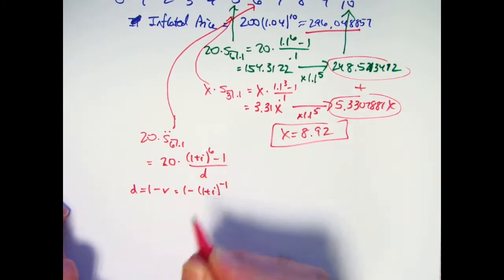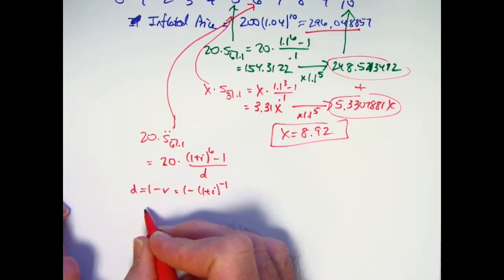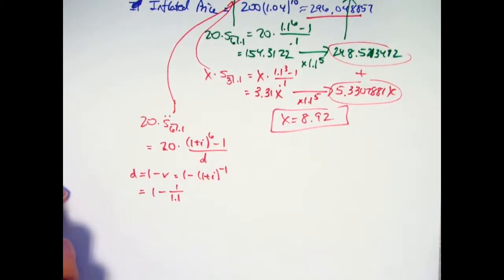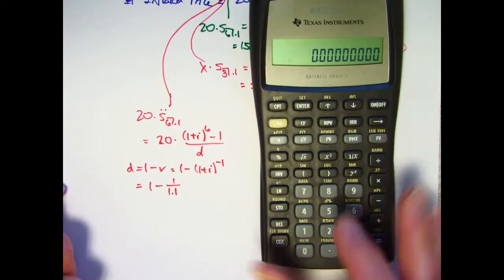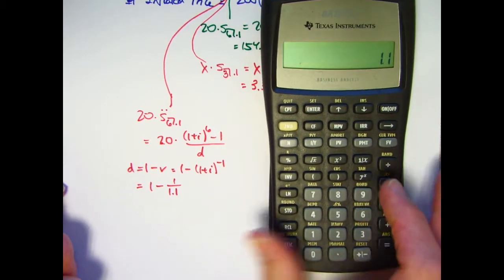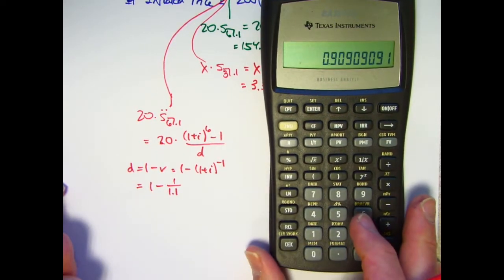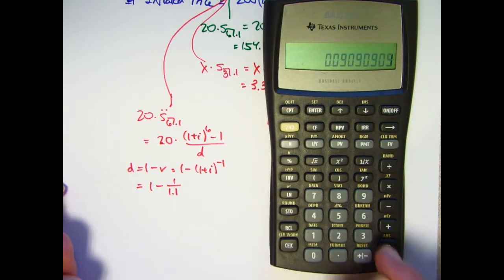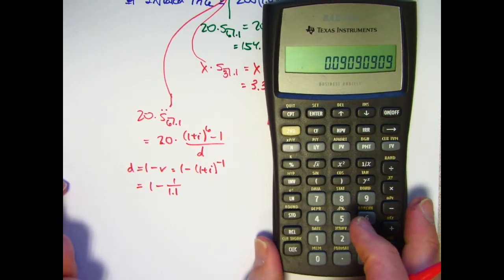So if i is 10%, as it is here, d is going to be 1 minus 1 over 1.1. Reciprocal of 1.1 is 0.90 repeating. Subtract that from 1, d is 0.09 repeating.